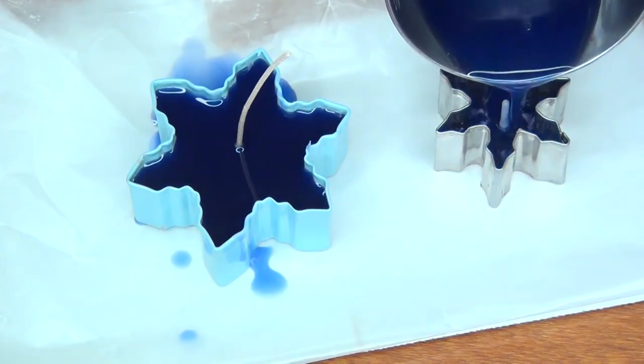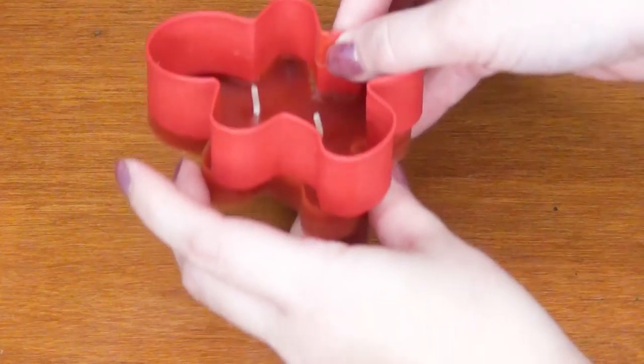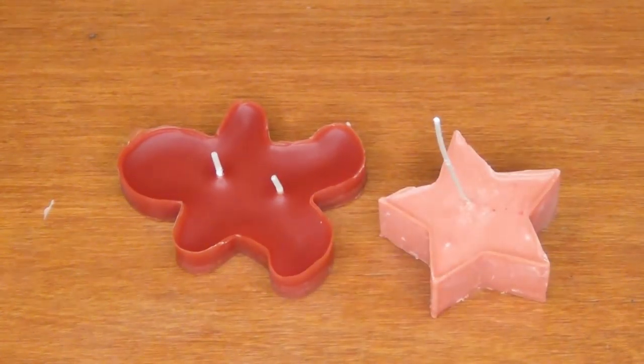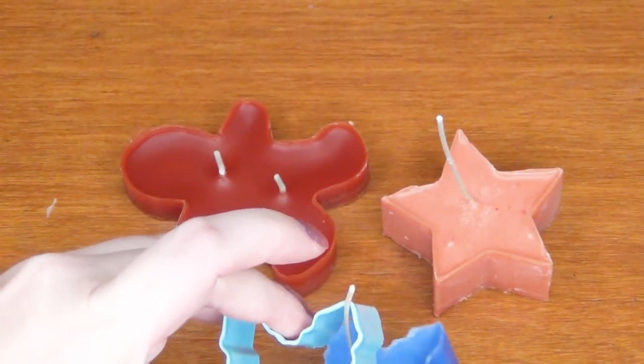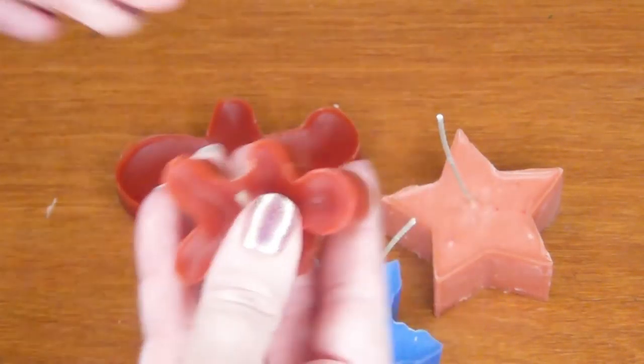Once your candles have had a chance to cool for a few hours, pop them out of their cookie cutters. If any of them have long wicks, trim the wicks, and then put them all together on a cute little plate. And that is your finished project.